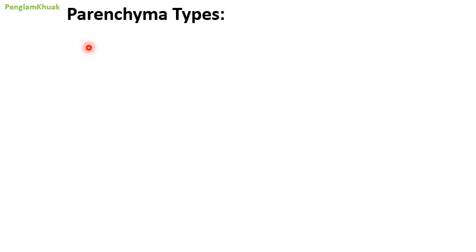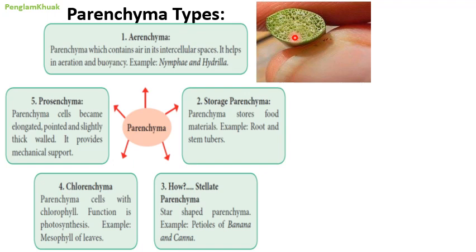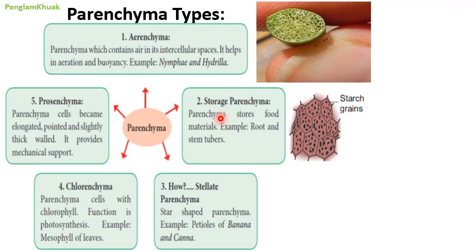There are different types of parenchyma cells. Number one is aerenchyma — parenchyma cells which contain air in intercellular spaces. This helps in aeration and buoyancy so the plant can float above the surface of water. Aerenchyma is mostly present in hydrophytic plants, for example in Nymphaea and Hydrilla. Number two is storage parenchyma — cells which store food, found in roots and stem tubers.